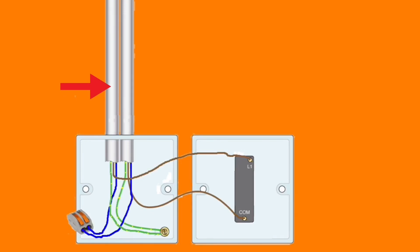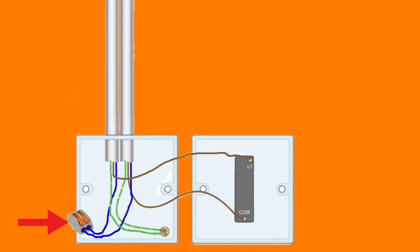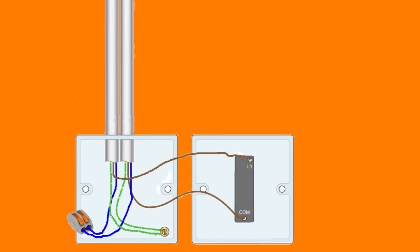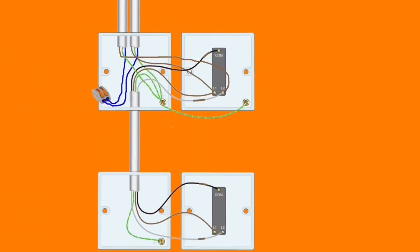The cable going out to feed the lighting points has the brown switching line conductor connected in L1, and its blue conductor which is a neutral connected with the other neutral from the supply in the maintenance free connector block. The CPC is secured with the other CPCs in the earth terminal. In this system we only take one cable up to the lighting point with a switching line, neutral, and CPC. If there are other lighting points in the same room on the same switch, you loop across the switching line, neutral, and CPC from one lighting point to another so all come on when the switch is thrown.